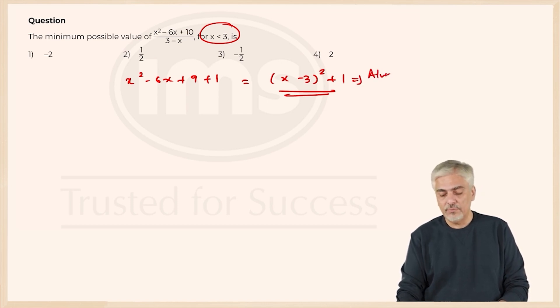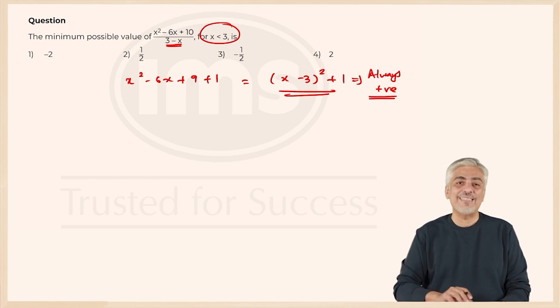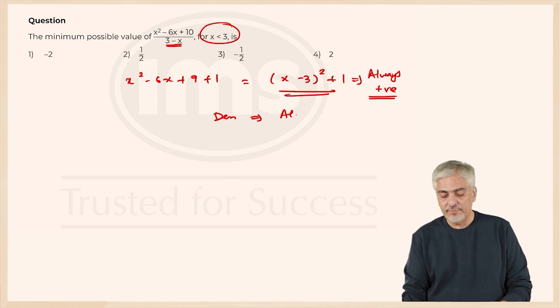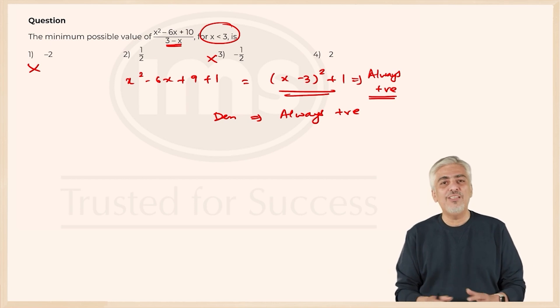My numerator is always positive and my denominator is also always positive because x is less than 3, so denominator is also always positive, which means these two can never be my answer because positive divided by positive can never give me negative, then maybe try using some values and you will get that answer quickly too.